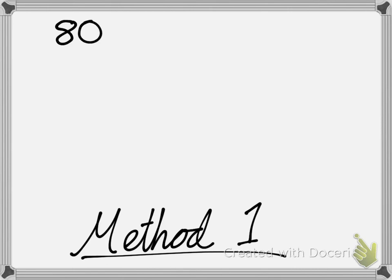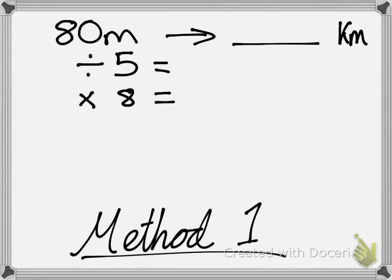Here's method 1. When converting from miles to kilometres, you do the reverse of converting kilometres to miles. Instead of dividing by 8 and multiplying by 5, what we're actually going to do this time is divide by 5, but then multiply by 8. And that will give us our answer.